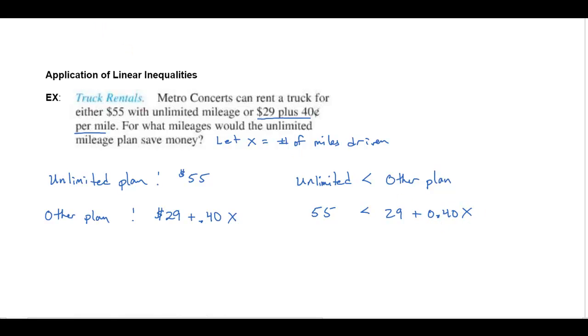So I can solve that very quickly. I'll just go ahead and subtract 29 from both sides. So that's going to give me $26 on this side and that's going to be less than the 0.40x that we have on this side.